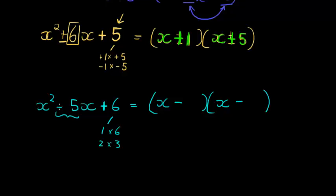Both of them have to be the same and give me negative 5. That can't be negative 1 and negative 6 because that would add up. If I add them together, I'd get negative 7. But negative 2 plus negative 3 would give me negative 5. Exactly what I need. So, x minus 2 times x minus 3. One more example.